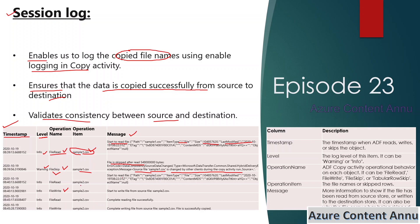Here you can see details for sample2.csv as well. This is another file being read from the source at a particular timestamp, then it started writing to the sink at another timestamp, then it finished reading, and then completed writing. All information regarding each and every operation is logged into this file using the session logging capability.